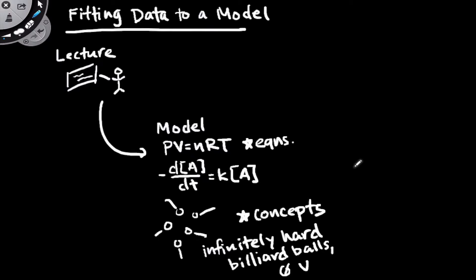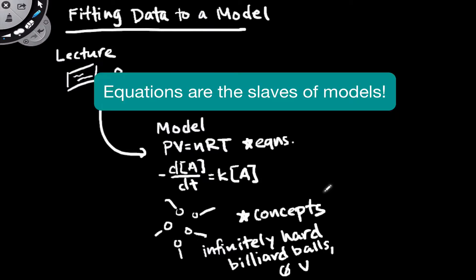And so PV equals nRT is intimately related to this conceptual model. And really, if you're the kind of person who's anathema of mathematics, it's worth appreciating that equations in chemistry are often the slaves of conceptual models. So we can derive, for example, the ideal gas equation from the conceptual model of the ideal gas. This is why we try to teach conceptually.